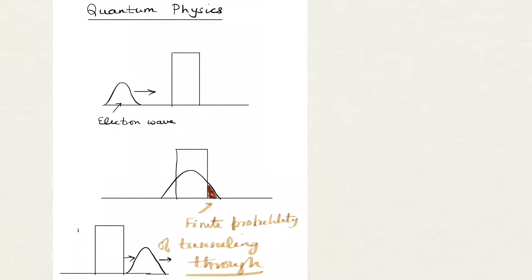So this red part which I have shown here, this is the finite probability. Now, as this keeps on increasing, this wave function will pass through this barrier. This is the quantum mechanical model.